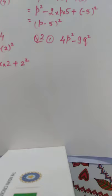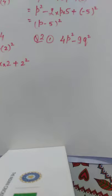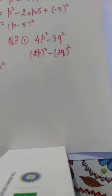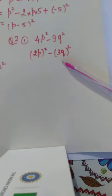Question: factorize 4p squared minus 9q squared. We see that 4p squared is the square of 2p and 9q squared is the square of 3q. Writing this as 2p whole square minus 3q whole square, we apply the a squared minus b squared identity to split it as 2p plus 3q into 2p minus 3q.